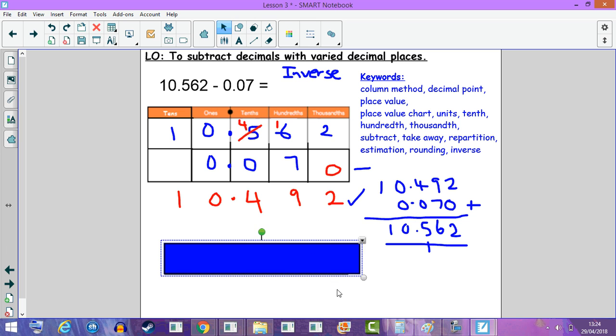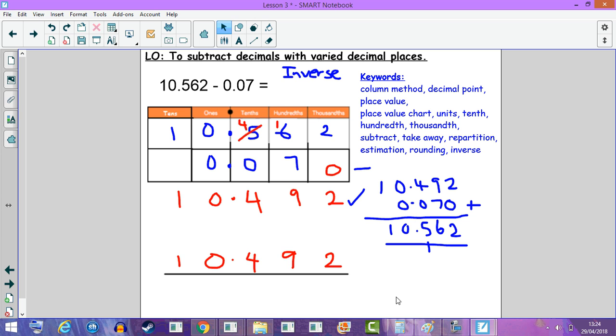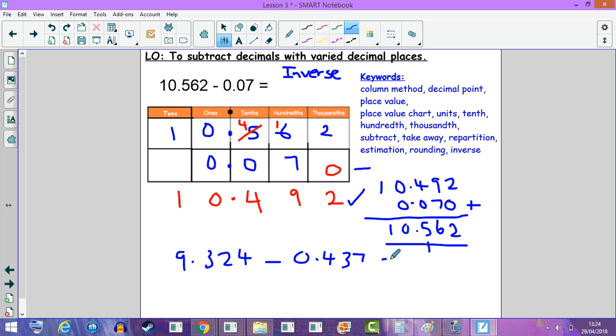If we need another example, here's one to practice below. You can try 9.324 take away 0.437, and write that on your whiteboards and try to work it out.